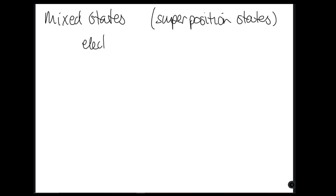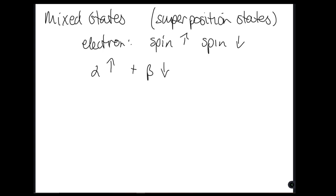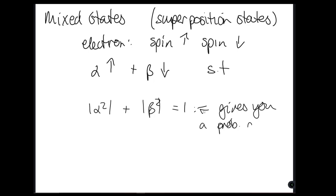Let's say we have an electron. Its states are spin-up and spin-down. A superposition state would be alpha times the spin-up vector plus beta times the spin-down vector, such that |α|² + |β|² = 1. This weighting gives you a probability distribution: |α|² is the probability of spin-up and |β|² is the probability of spin-down. So we're already bringing in that probabilistic structure, which is what drew me into this stuff — the overlapping material between pure maths and statistics.